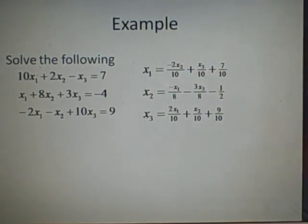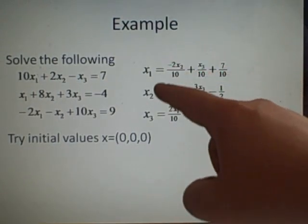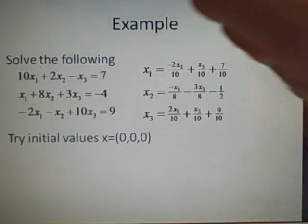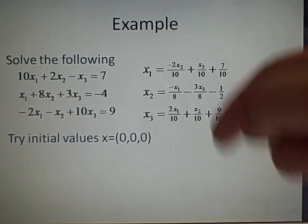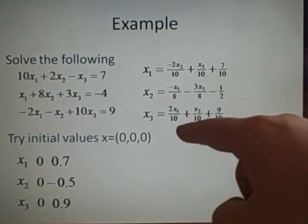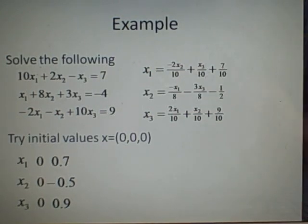In the Jacobi method, now that we have three equations rearranged for the three variables, we start with an initial value — generally anything, but zero, zero, zero is the easiest. So we set x1, x2, and x3 all equal to zero on the right-hand side. Substituting these in, the first values we get for x1, x2, and x3 are 7 over 0.7, minus a half, and 0.9, since the variable terms cancel out.